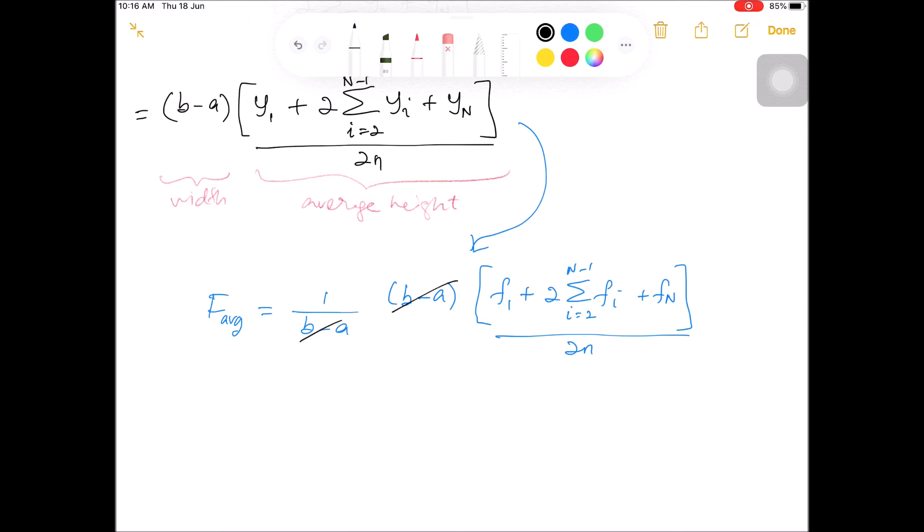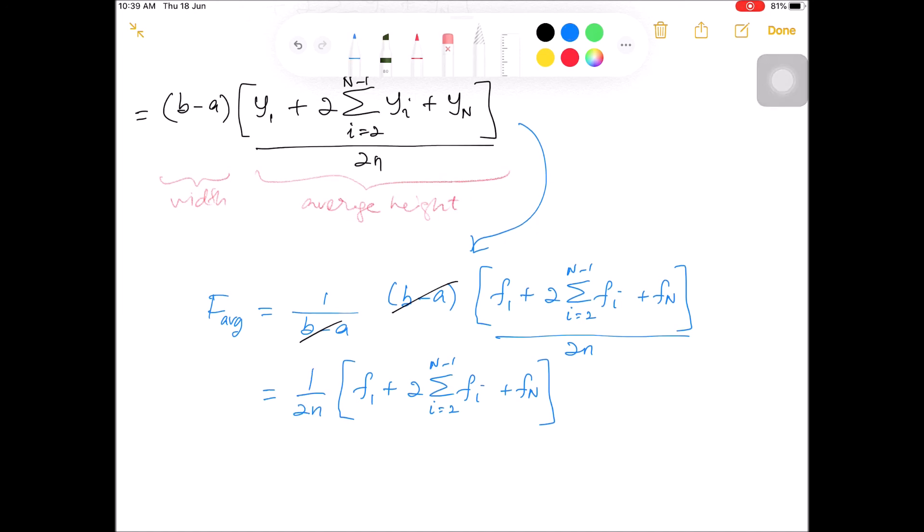And then notice that we can cancel out this term and we have the final expression for the average value of a function. So I think it's better to move this to N here for better presentation.